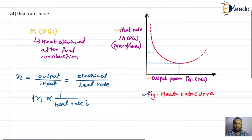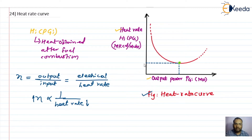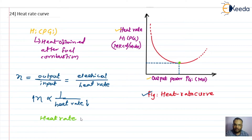From the graph we can see that the efficiency will be maximum at the point where we are giving the minimum heat rate and getting the maximum output power. Taking a typical example, this heat rate value is typically around 2.5 Mega kilocalories per megawatt-hour.